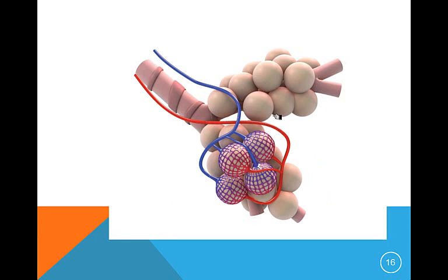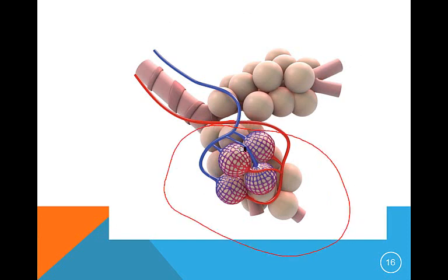Here's a close-up of the alveoli. They look like grapes, with a capillary bed. And this is your bronchiole here.